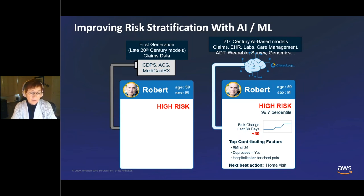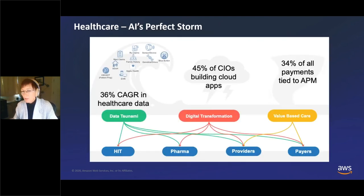You have to ask yourself: why now? What's changed? If risk stratification isn't new, what is new? It's really three things that have changed, and the first one is this whole data tsunami.